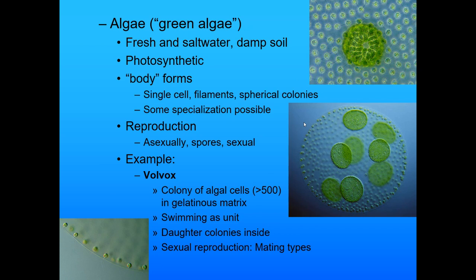Then we have algae. You find those in fresh and salt water. They're photosynthetic, with lots of different body forms — single cells, filaments, spherical. They can reproduce asexually, with spores, or sexually. The one we're going to look at as an example is volvox. Volvox is a colony of algal cells — about 500 of them — that swim in a gelatinous matrix as a unit. These daughter colonies are on the inside. They can have sexual reproduction that relies on mating types, and they have cilia on the outside that allow them to move. They swim and communicate together.